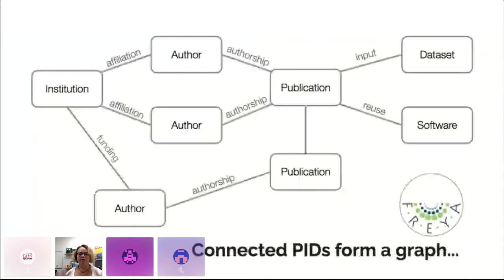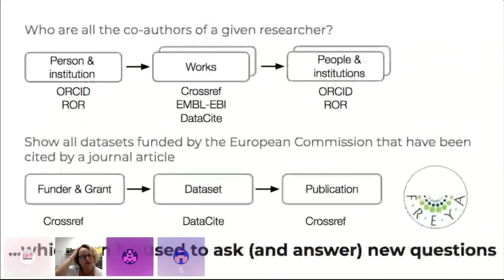This really shows the true power of PIDs — where they're connected and the rich information we can query about relationships between entities and outputs of research. The PID graph came out of the FREYA project, a European project, and there are great short videos on YouTube about it. An example query: who are all the co-authors of a given researcher? You can look at the person, institution, and recorded works assigned identifiers from Crossref or DataCite. Another query: show all datasets funded by the European Commission that have been cited by a journal article. The PID graph works well when everybody has assigned PIDs to researchers, entities, and research outputs.